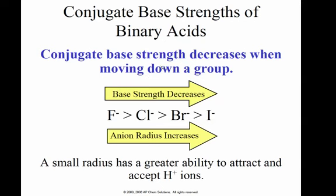So if I go down a row, the strength of the acid gets stronger, then that also means as I go down a row, the strength of the conjugate base decreases.